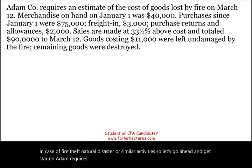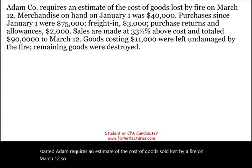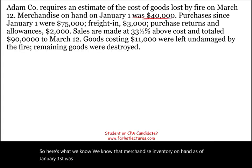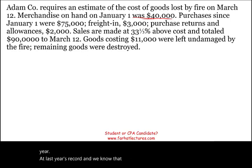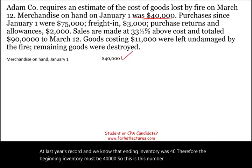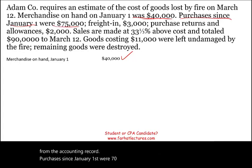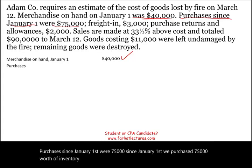Adam requires an estimate of the cost of goods sold lost by a fire on March 12th — something happened at their warehouse and they lost some inventory. We know that merchandise inventory on hand as of January 1st was $40,000. We can look at last year's record — ending inventory was $40,000, therefore beginning inventory must be $40,000. Purchases since January 1st were $75,000, which is also from the accounting record, and we add this to our beginning inventory.